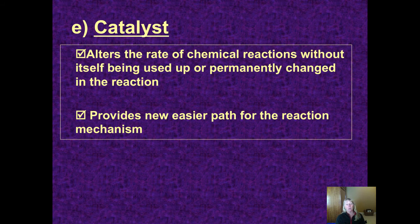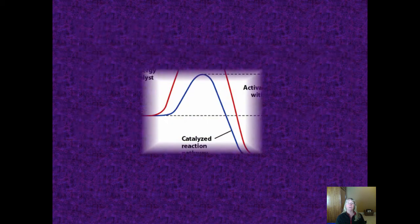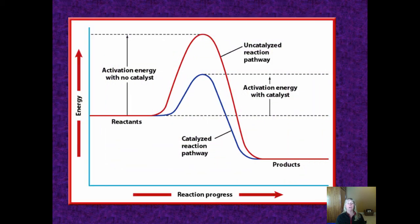Finally, a catalyst, or sometimes an inhibitor, a catalyst speeds up a reaction, an inhibitor slows it down. A catalyst is defined as a substance which will alter the rate of a chemical reaction without itself being consumed or permanently changed. And as we learned in the last chapter, essentially what a catalyst does is it provides a new, easier pathway for the reaction mechanism. The red line characterizes without a catalyst. The blue line shows how the activation energy is lowered when a catalyst is added.